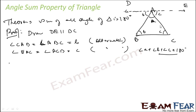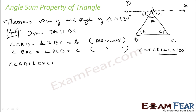So if we add all these three angles and form a straight line, we just see that angle DAB plus angle B plus angle CAE is equal to angle DAE, which is 180 degrees.